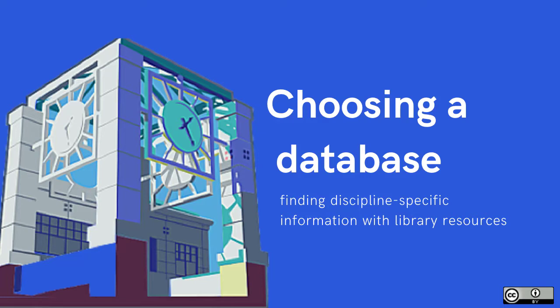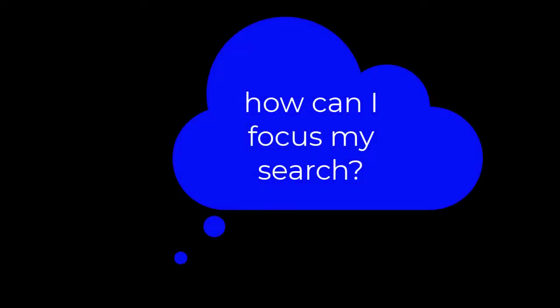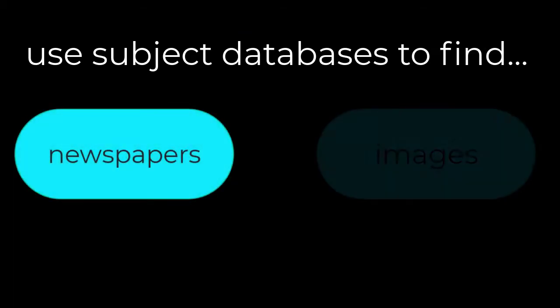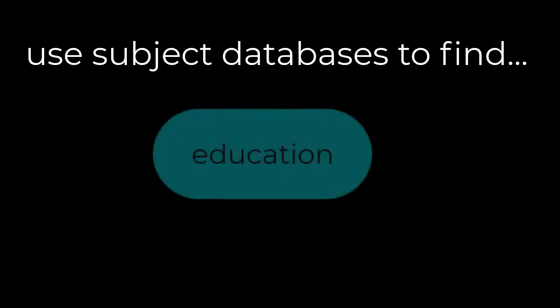Choosing a database. This video will show you how you can find a database specific to your discipline or major. The library subscribes to a number of subject databases which can provide a more focused search than OneSearch. You can use these databases to look at specific types of information, like historical newspapers or images, or to look exclusively at research in a specific discipline, like education.